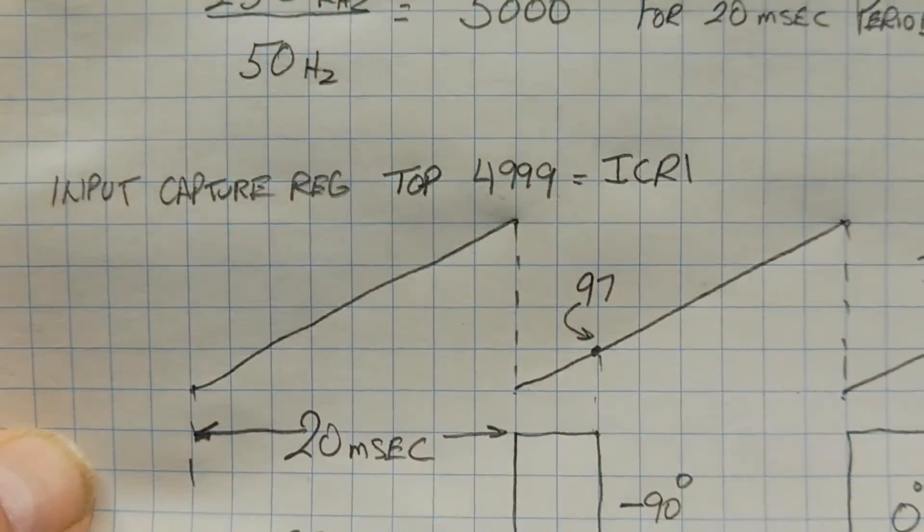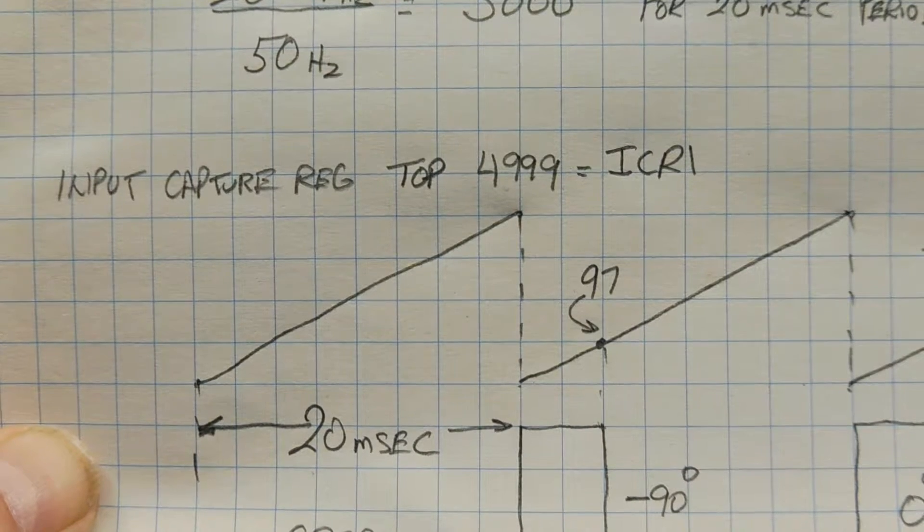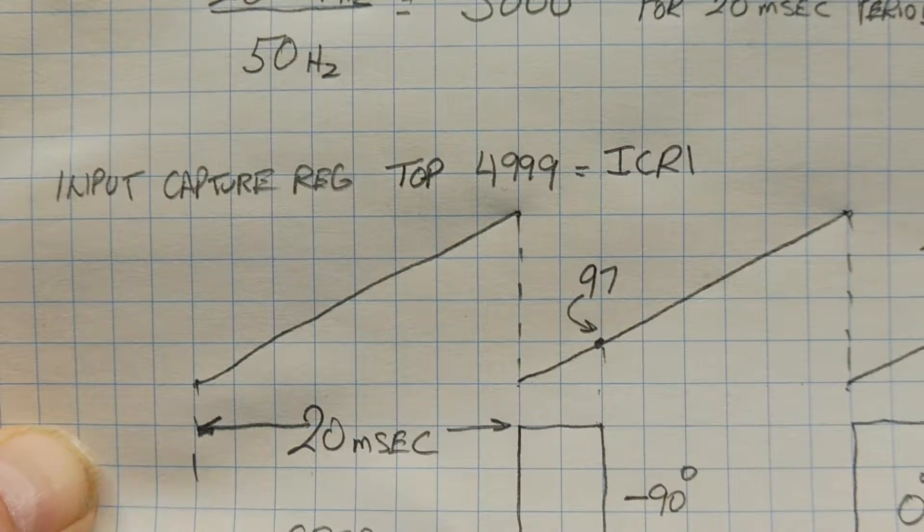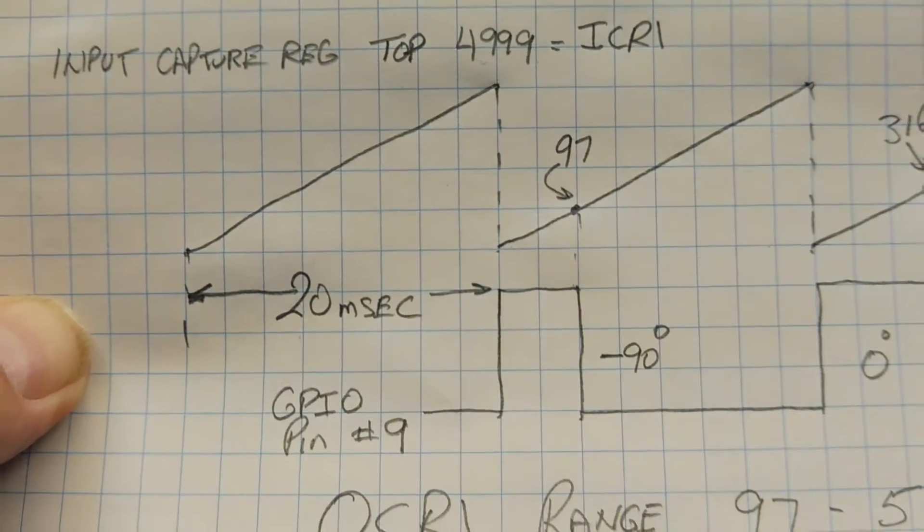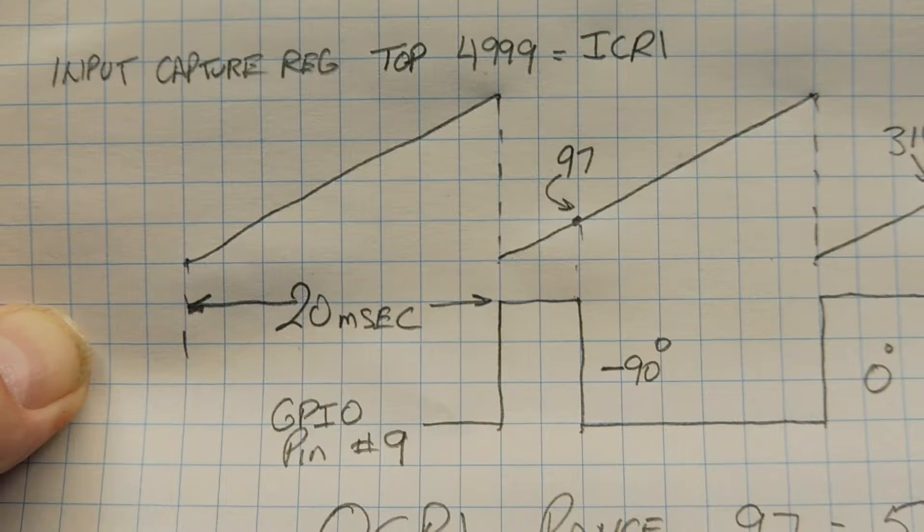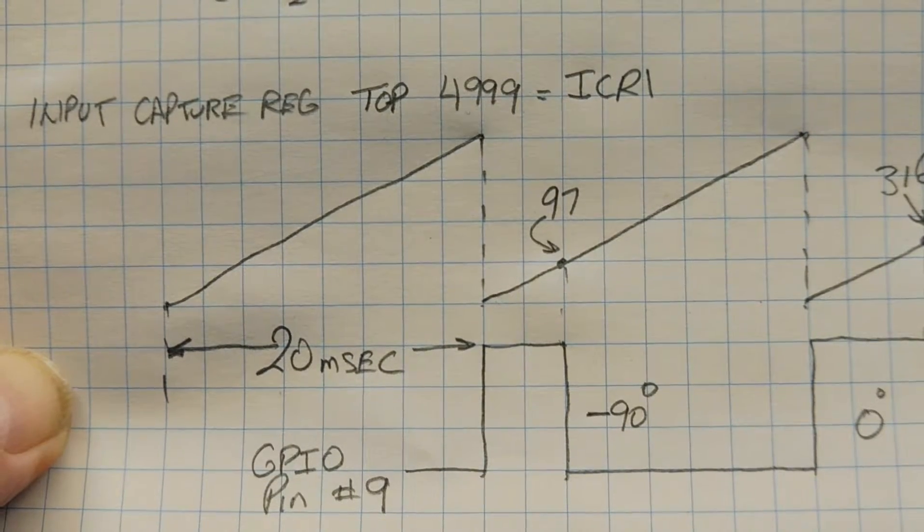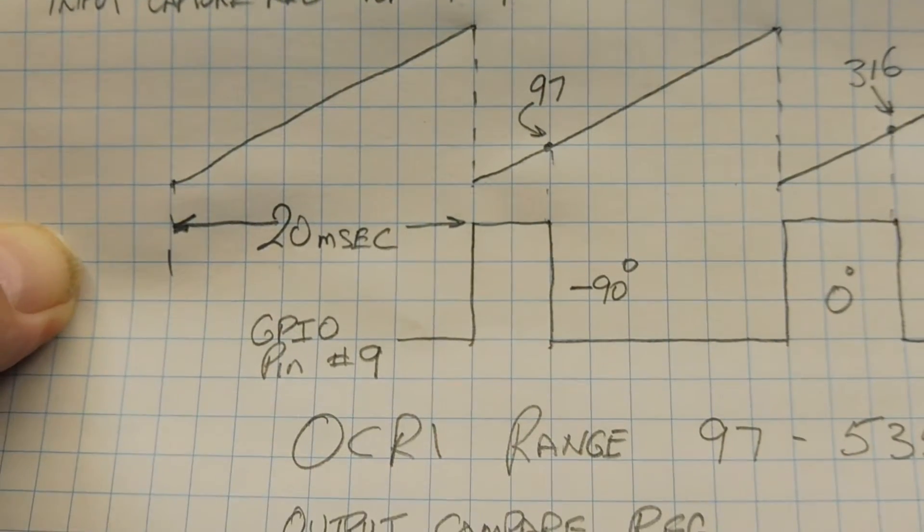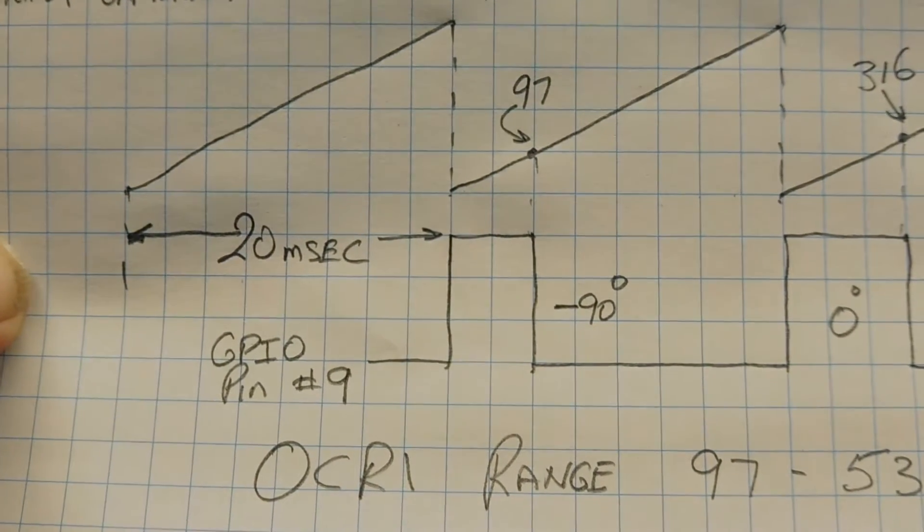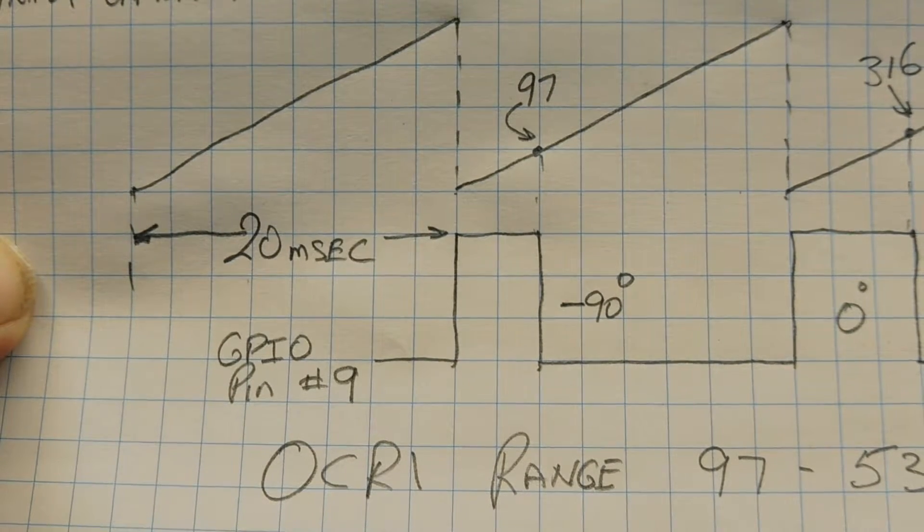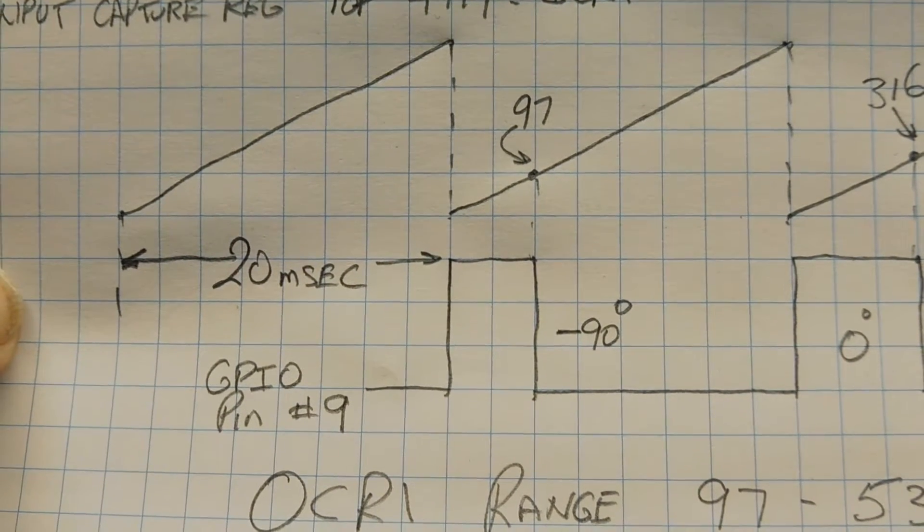So if we load 4,999 into ICR1, our input capture register, now the counter will count from zero to 4,999, which will give us 5,000 counts, and it will roll over to zero and continue counting again. And that will give us a 20 millisecond period. Now every time the counter reaches its top count of 4,999 and rolls over to zero, the GPIO pin on the Arduino Nano, number 9, will raise up to 5 volts. Now it will stay at 5 volts until the counter value matches the value entered into the OCR1 output compare register. And in this case, that value is 97.